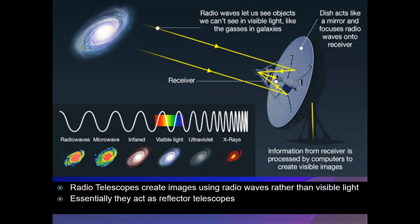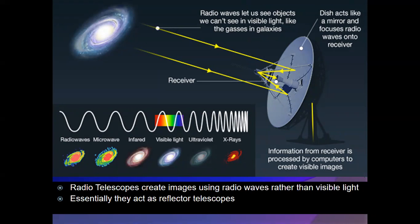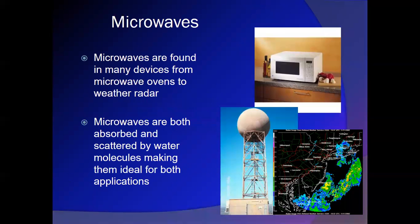Radio waves are used in astronomy to see things not visible in the optical spectrum. A radio telescope is essentially a big reflector telescope. Because the waves are so large, it's hard to form an image, so astronomers place many radio telescopes together in an array, which effectively acts as one very large telescope for much greater detail.